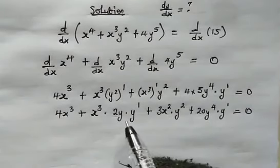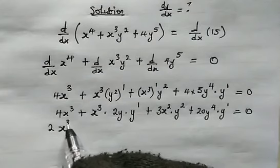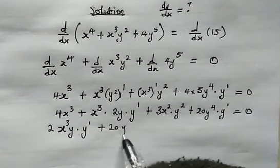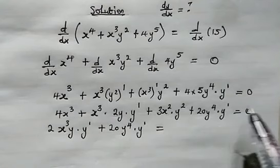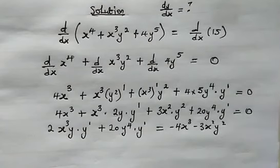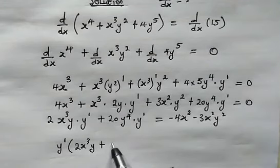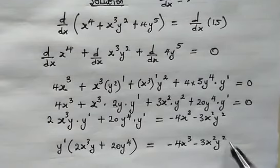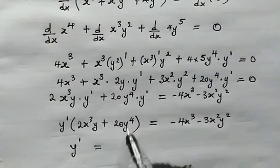Now let's group the terms with y prime together. We get 2x cubed y multiplied by y prime, then plus 20y to the power of 4 multiplied by y prime. This is equal to negative 4x cubed minus 3x squared y squared, crossing over. From here, we factor out y prime. We get y prime times the bracket 2x cubed y plus 20y to the power of 4, equal to negative 4x cubed minus 3x squared y squared.